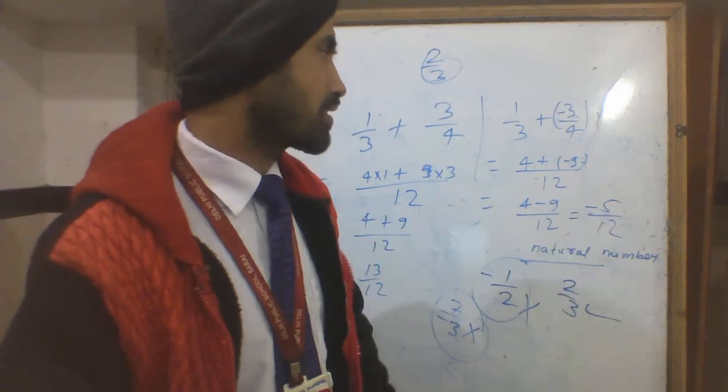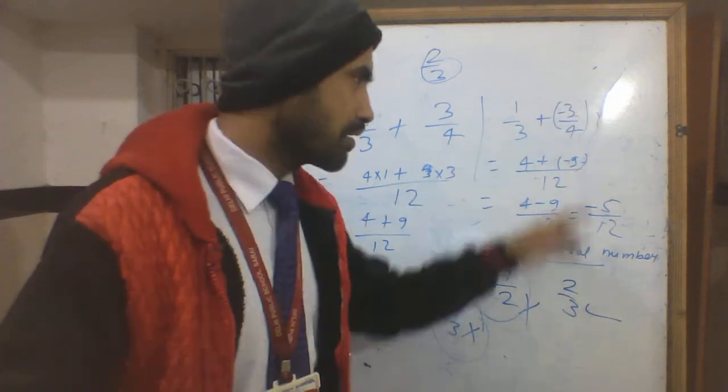Let's try another example: 1/3 minus 3/4. The LCM is still 12. This becomes 4/12 minus 9/12, which equals -5/12.